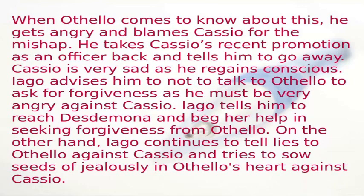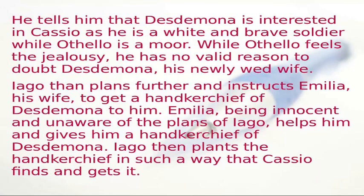Iago tells Othello that Desdemona is interested in Casio because he is a white and brave soldier, while Othello is a Moor. While Othello feels jealousy, he has no valid reason to doubt his newlywed wife. Iago then plans further and instructs his wife Emilia to get Desdemona's handkerchief for him. Emilia, innocent and unaware of Iago's plans, helps him. Iago then plants the handkerchief in such a way that Casio finds and gets it.